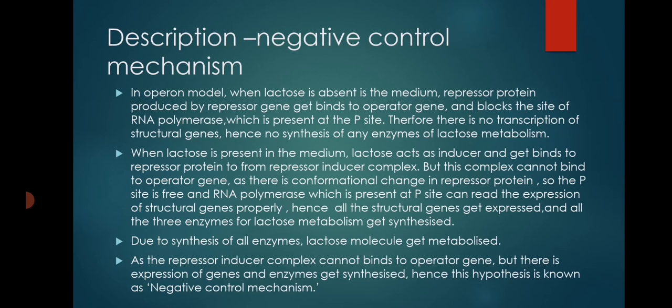When lactose is present in the medium, lactose acts as an inducer. The repressor protein formed by the repressor gene binds to the inducer (lactose), forming a repressor-inducer complex. This complex cannot bind to the operator gene. Therefore, RNA polymerase at the P site can properly read the expression of structural genes, and all structural genes Z, Y, and A are transcribed and translated to form the enzymes — beta-galactosidase, beta-galactoside permease, and transacetylase respectively. When lactose is absent, there is no synthesis of enzymes.